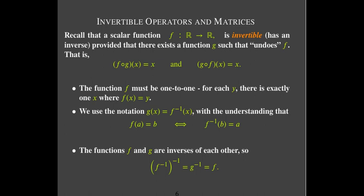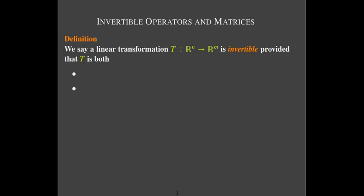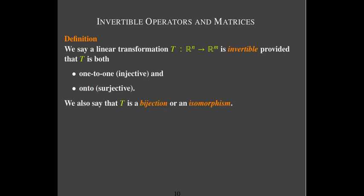That's a quick review from elementary algebra. We know that linear transformations are functions, so it should make sense that we have an invertible linear transformation. There are conditions necessary for the linear transformation T to be invertible: the first is that it should be 1-to-1, and the second is that it needs to be onto. Because it is both injective and surjective, we call it a bijection or an isomorphism — both terms mean an invertible linear transformation.